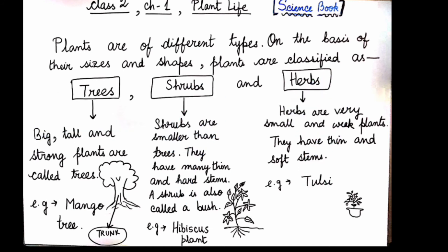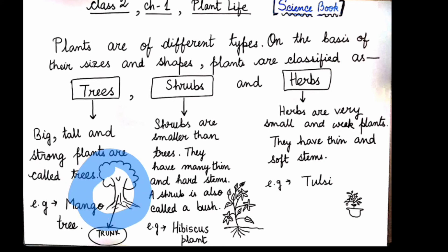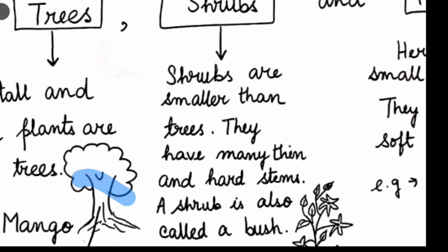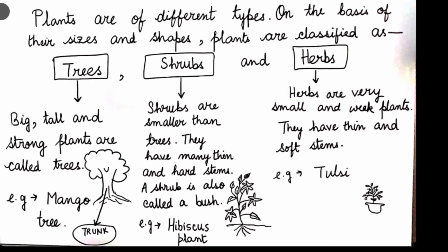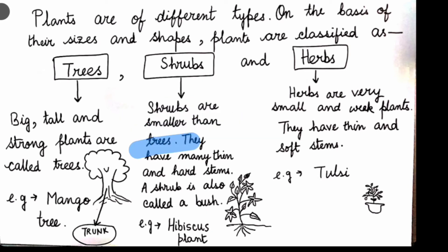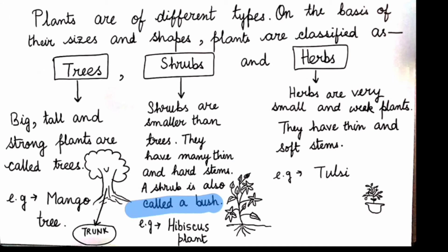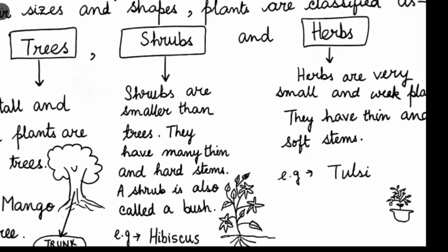Trees are the big, tall, and strong plants. These plants have a hard trunk. An example of a tree is the mango tree. Shrubs are smaller than trees and have many thin and hard stems. A shrub is also called a bush — for example, a hibiscus plant.